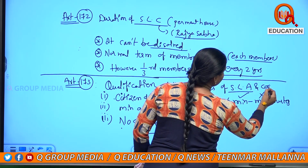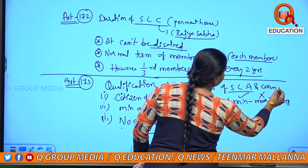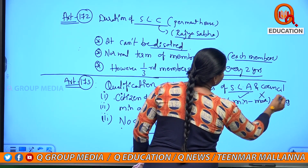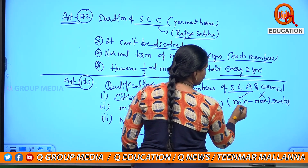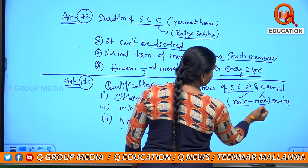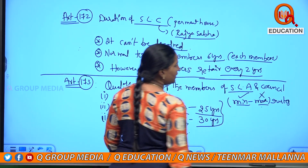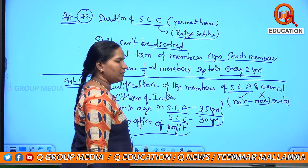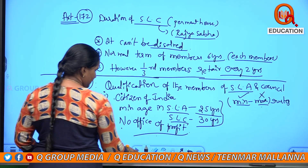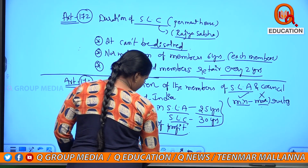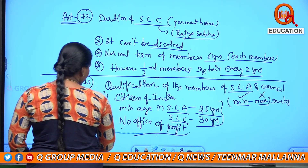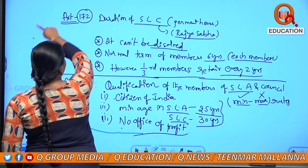Article 173 deals with the qualification of members of the State Legislative Assembly and also the council. The same qualifications apply to the council as well.